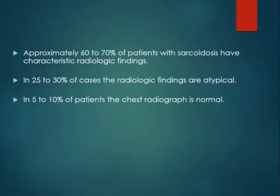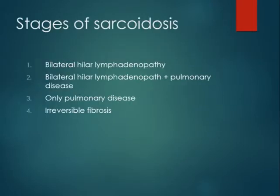Approximately 70% of patients with sarcoidosis have characteristic radiologic findings, and in up to 30% the findings are atypical. In about 10% of patients the chest radiograph can be normal. There are four stages of sarcoidosis: Stage 1 is bilateral hilar lymphadenopathy; Stage 2 is bilateral lymphadenopathy plus pulmonary disease; Stage 3 is pulmonary disease only; and Stage 4 is irreversible fibrosis.